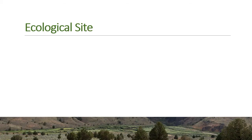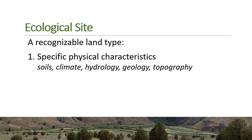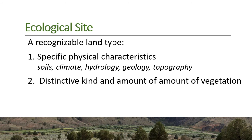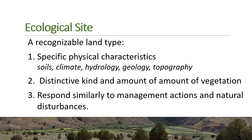Ecological sites are recognizable land types with specific physical characteristics such as soil, climate, hydrology, geology, and topography. They produce a distinctive kind and amount of vegetation because of those physical characteristics. Importantly, they respond similarly to management actions or natural physical disturbances. That's why they're important in management — if you graze, mow, or burn a piece of land on an ecological site, that whole piece of land has the same capacity to respond. Or if a fire comes through, that ecological site has the same kind of capacity to respond.